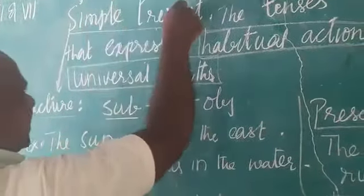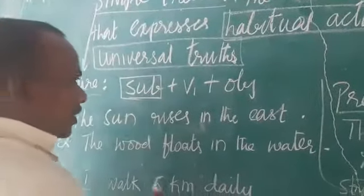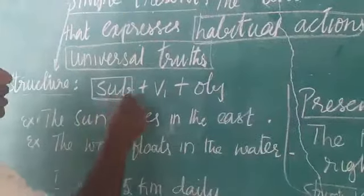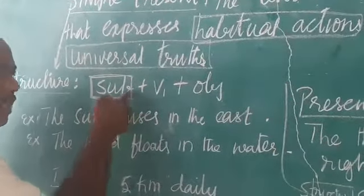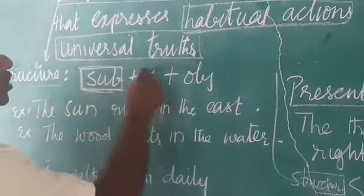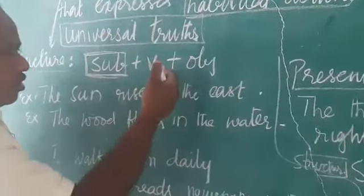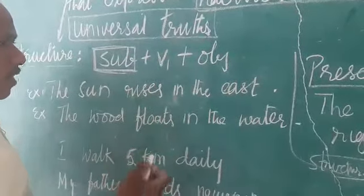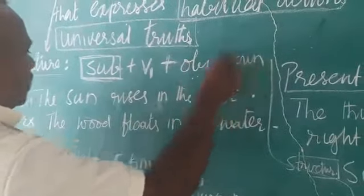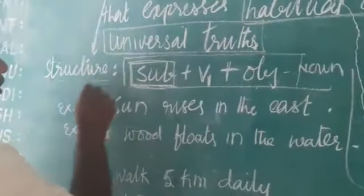If you want to write a simple present tense, first you should take the subject. We have already discussed what is subject and what is the predicate in a sentence. Subject is seen in the beginning of the sentence — it can be a noun, a pronoun, or a noun phrase. Next is V1, then V1 plus object. The object is again a noun.